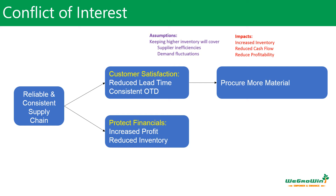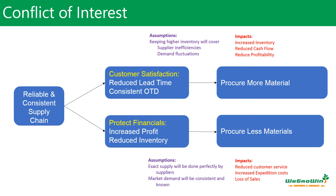The other way to protect financials is to procure less material, assuming that suppliers will deliver exactly on time and market demand will be consistent. But these conditions are rarely met. The impact of under-procurement is reduced customer service levels, increased expediting costs to speed up materials, loss of sales, and potentially permanent loss of customers, creating a gray area.